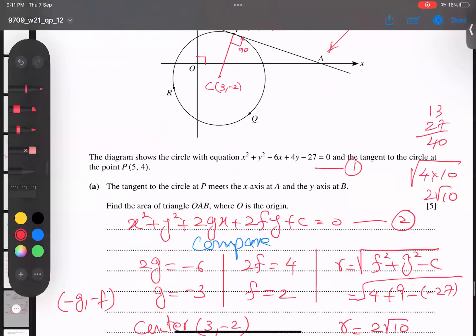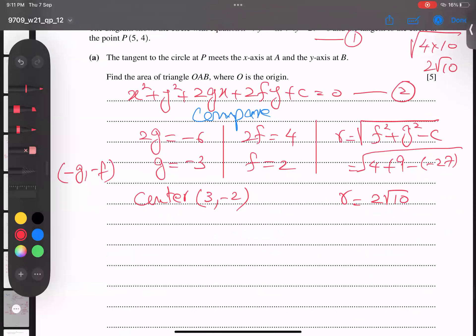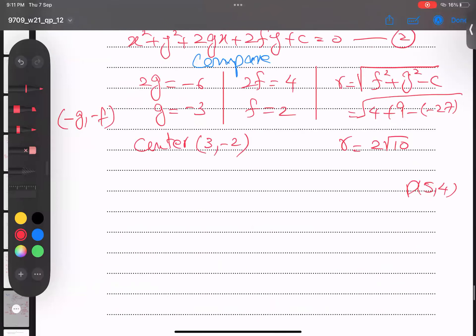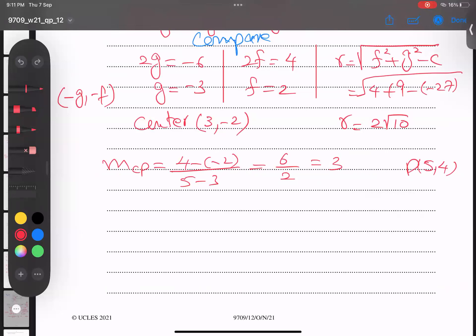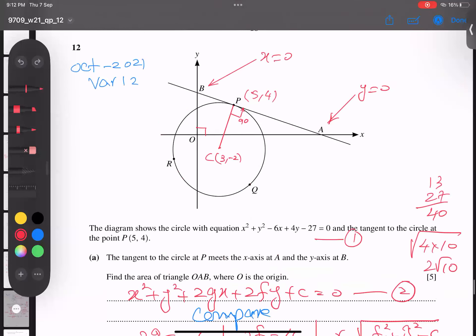So first of all, I'm finding the gradient. So (5, 4) is point P and (3, -2) is center C. What is the gradient of CP? Y₂ - Y₁ over X₂ - X₁. I got 4 - (-2) over 5 - 3, which gives me 6/2, and I got a gradient of 3. So CP gradient, I mean the radius, is 3,